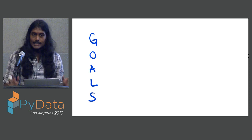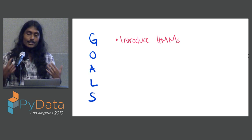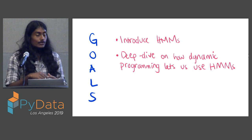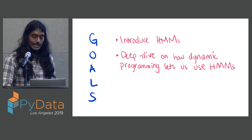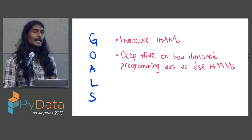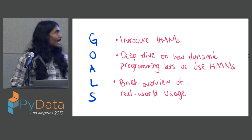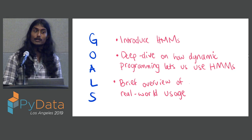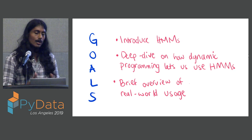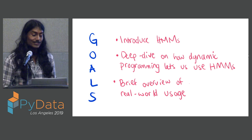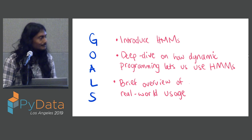So what are the goals? Just want to set some expectations so that nobody's disappointed. First of all, we're going to introduce this concept of hidden Markov models. We're going to use this concept of dynamic programming - I'll explain more about what exactly that is - to see how we can use hidden Markov models to make predictions. And then we'll do some overview of some places where hidden Markov models are used in the real world. That's where we'll talk a little bit about the training part of it. I don't want to get too deep into the training part because that's basically another talk.